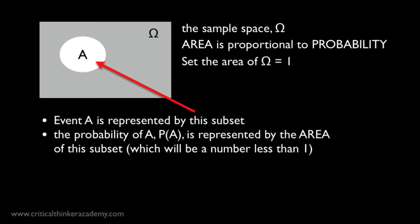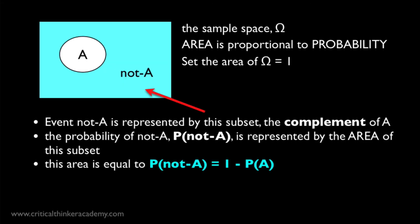So how do we represent NOT A on this diagram? Well, NOT A is just the complement of A. It's the fraction of omega that is NOT in A. And it looks like this. It's all this light blue area.